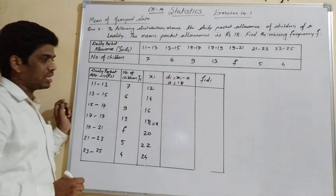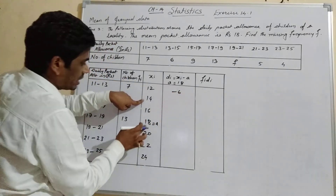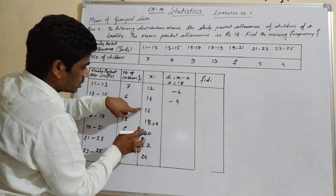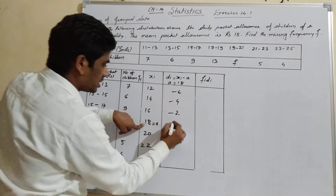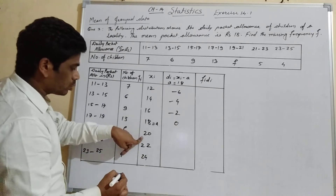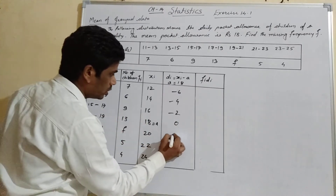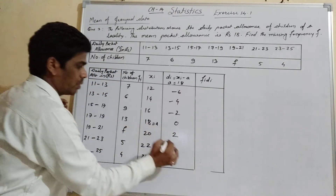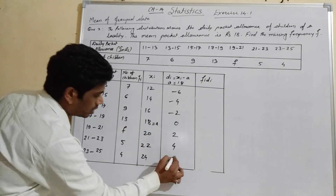Now we compute di = xi − a. So: 12 − 18 = −6, 14 − 18 = −4, 16 − 18 = −2, 18 − 18 = 0, 20 − 18 = +2, 22 − 18 = +4, and 24 − 18 = +6.